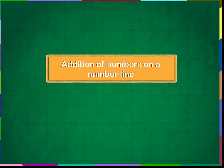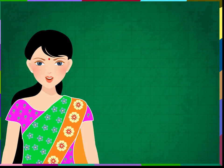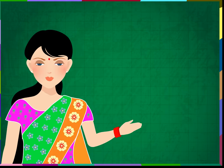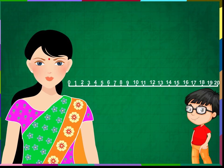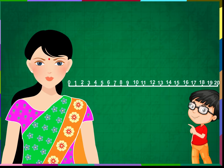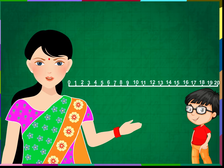Addition of numbers on a number line. We have already done number line addition with very small numbers. Now we are going to learn the same with bigger numbers. A straight line with numbers starting from 0 in equal gaps is called a number line. Observe the number line on the screen — it has numbers from 0 to 20.